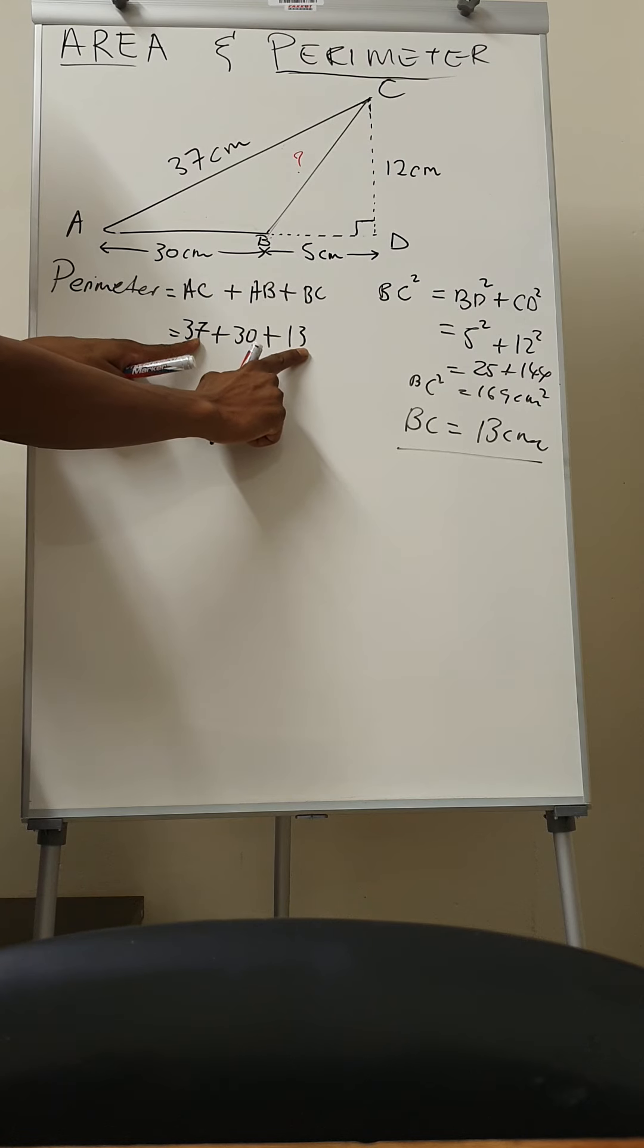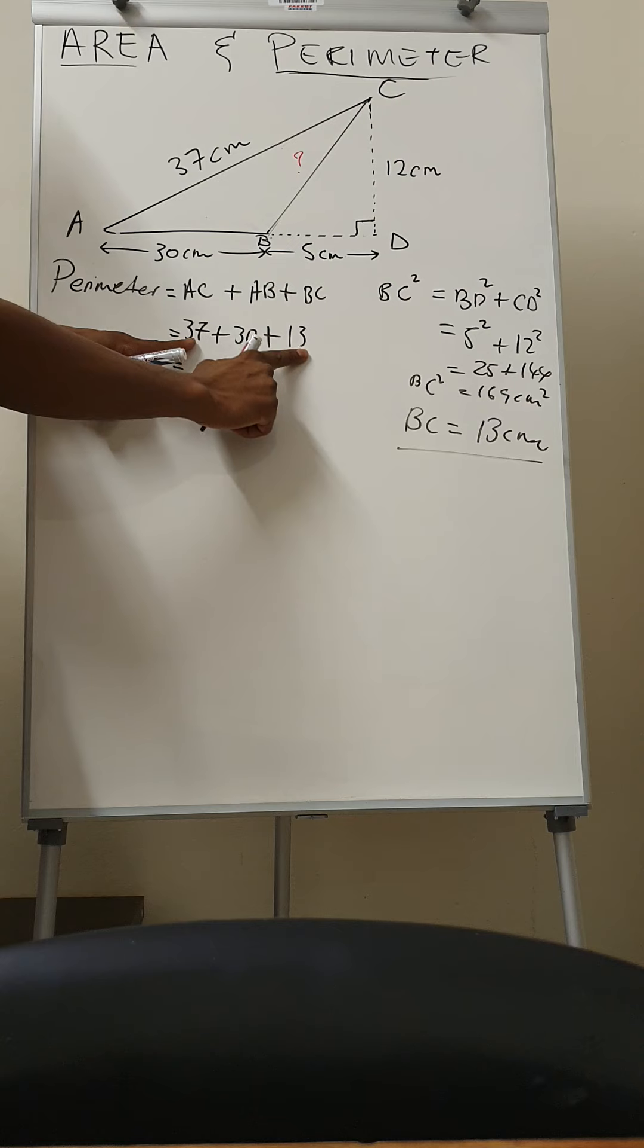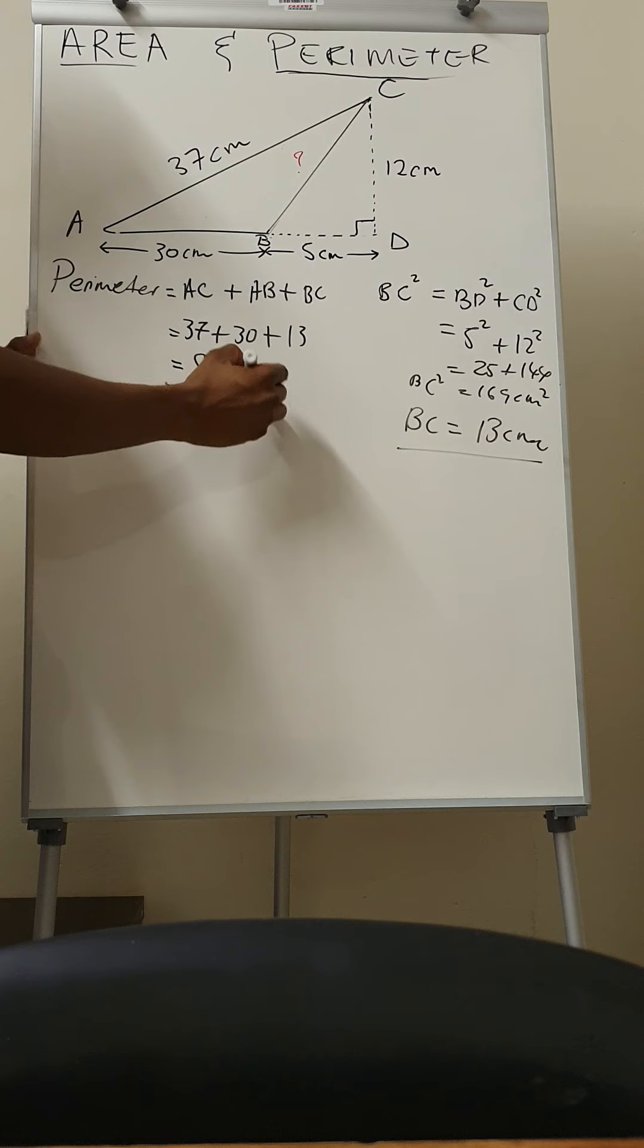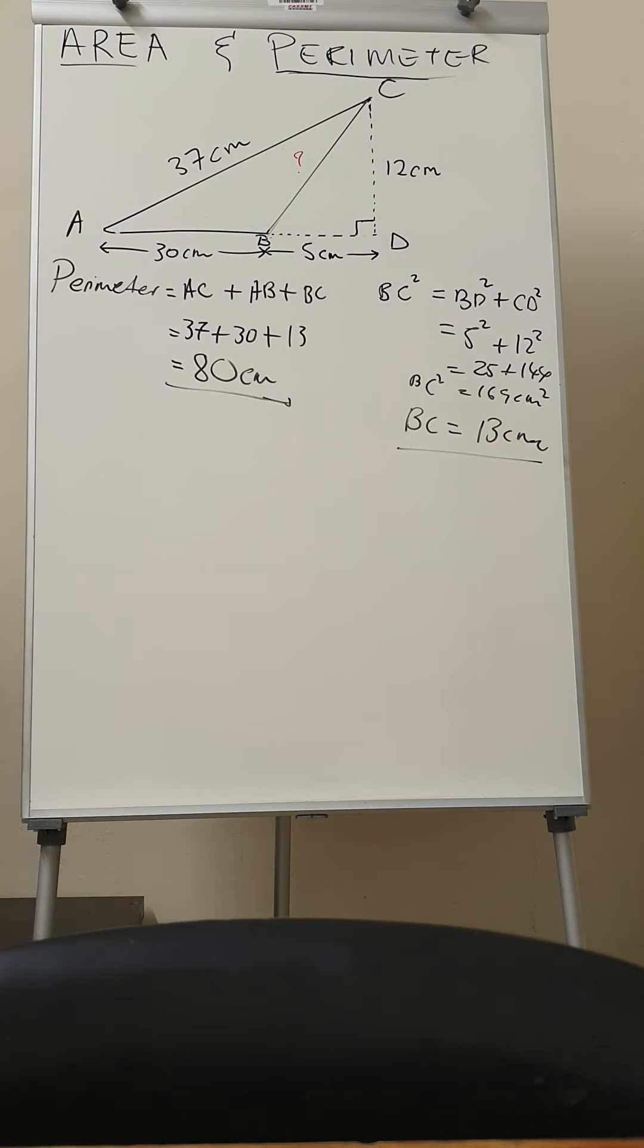And then you can add that. So adding, 7 plus 3 that is 10, so that gives you a 40, and then 50, and then 80. So that will be 80 centimeters. All right, then you are done with the perimeter of this triangle.